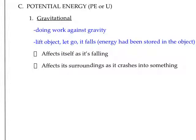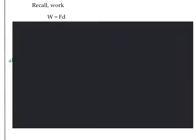For the first type — gravitational potential energy — this is the one that will be most common for us. Any time you do work against gravity, you have given that object gravitational potential energy. Since you've done work against gravity, we're going to use that idea of work to come up with our equation for gravitational potential energy.